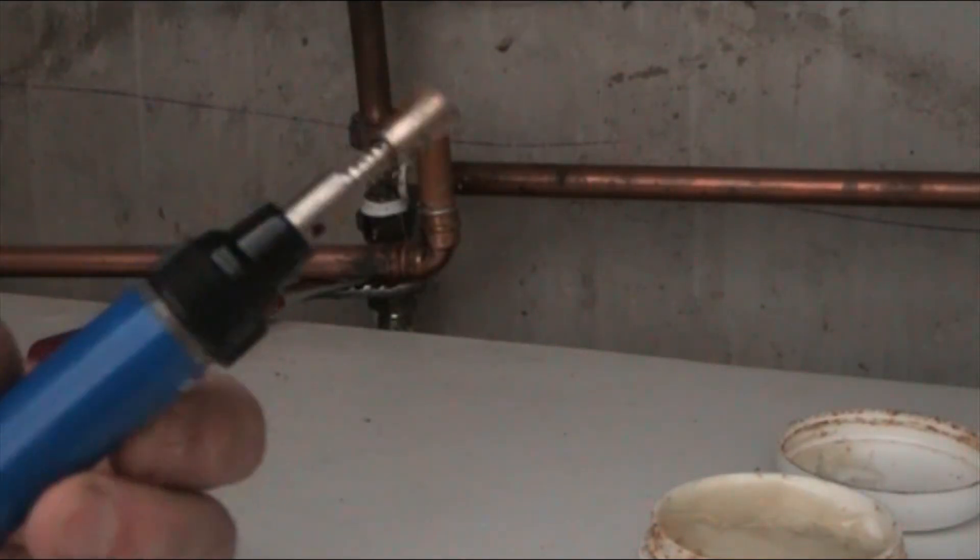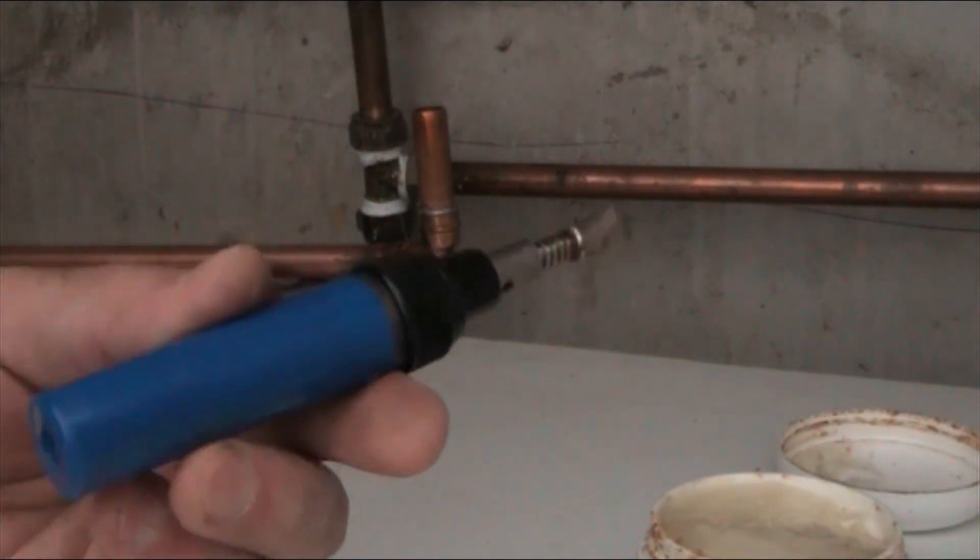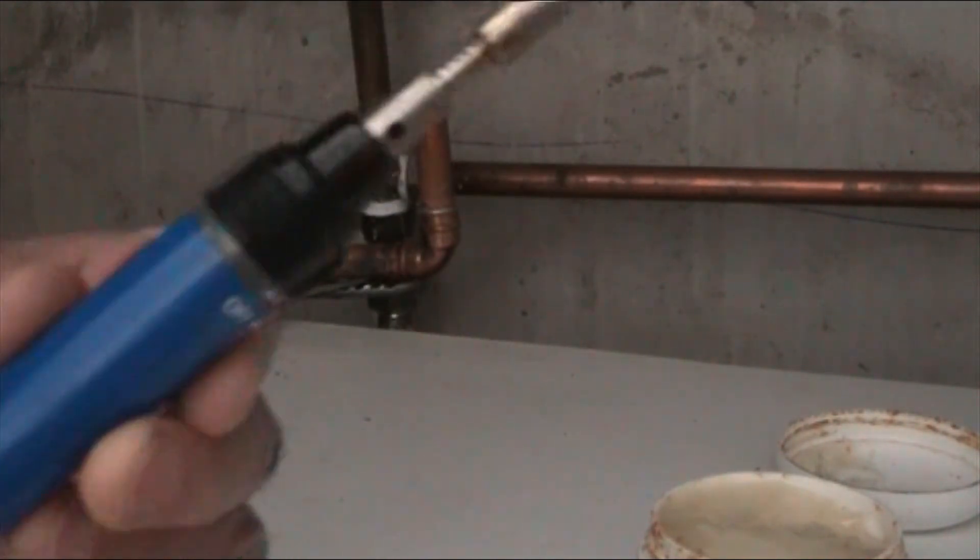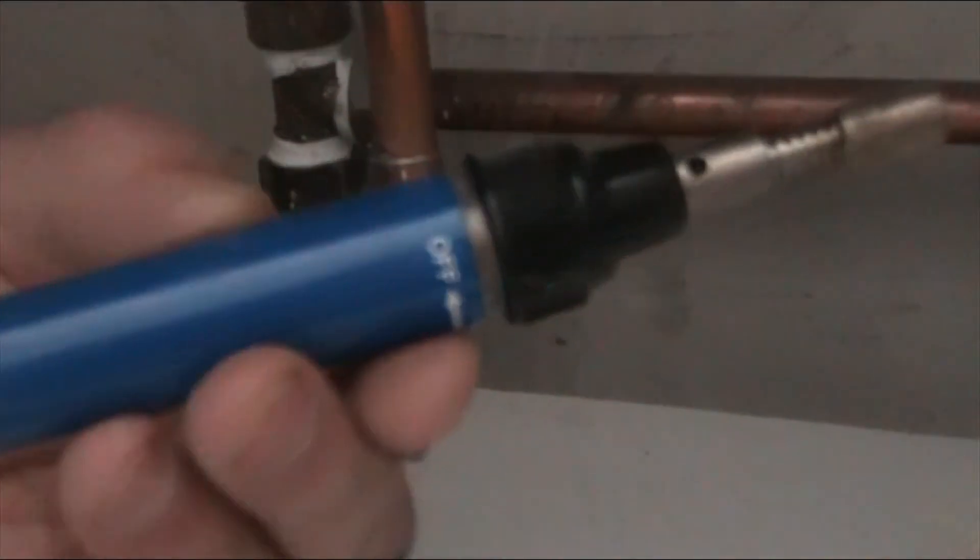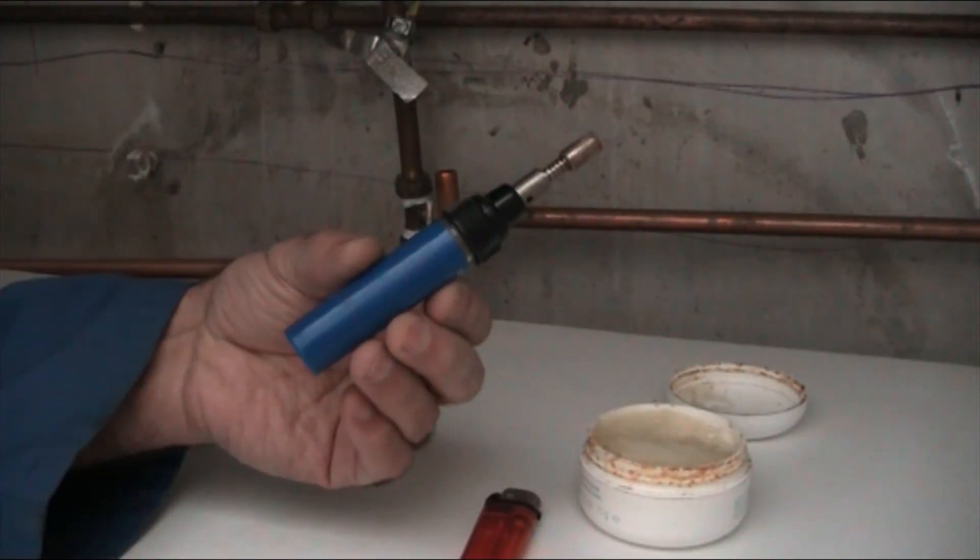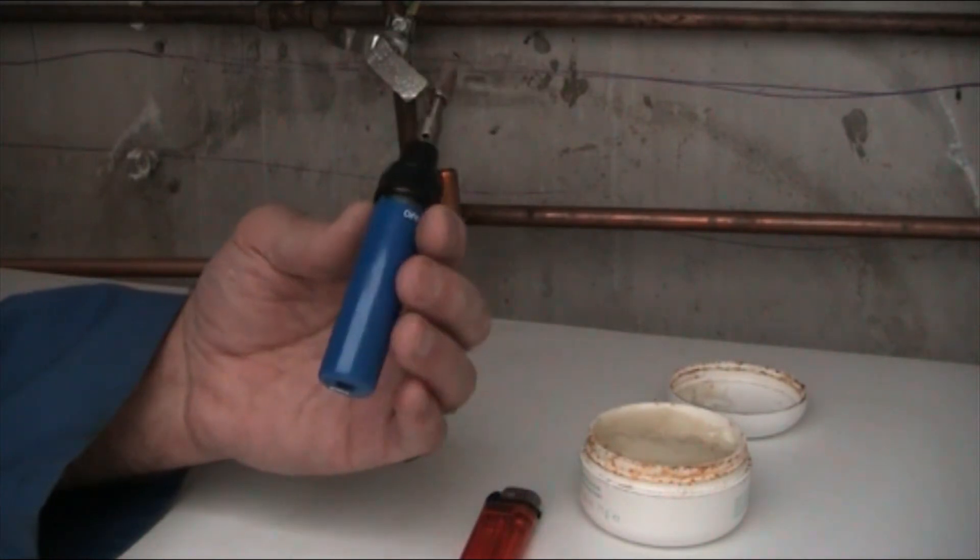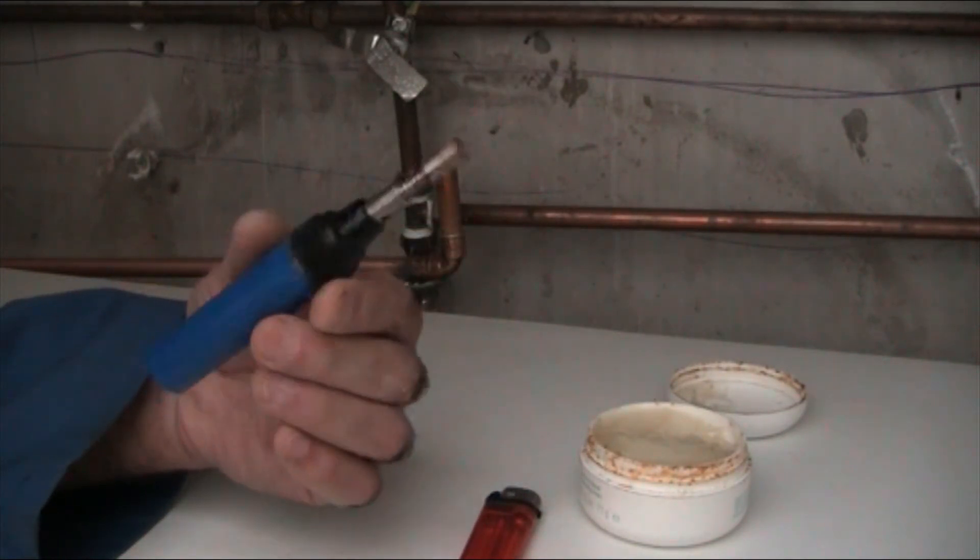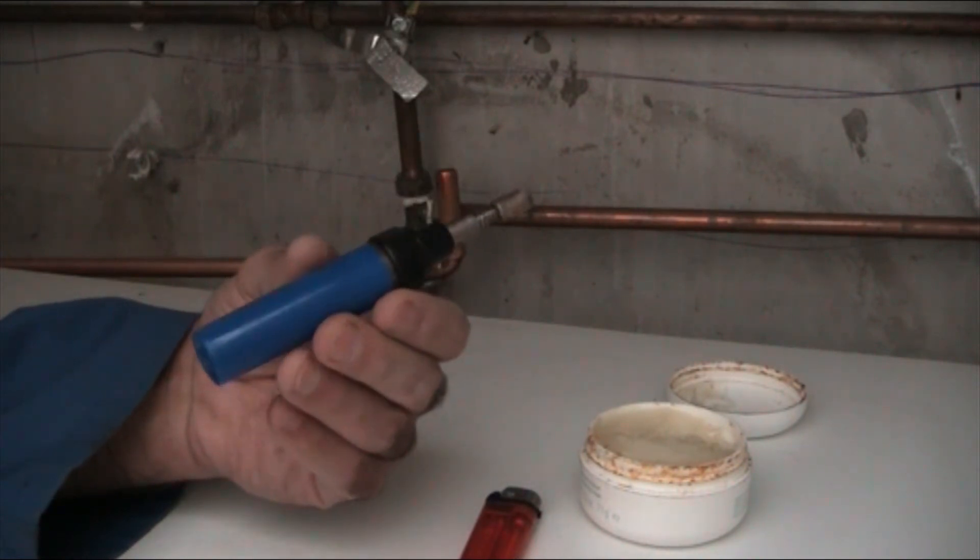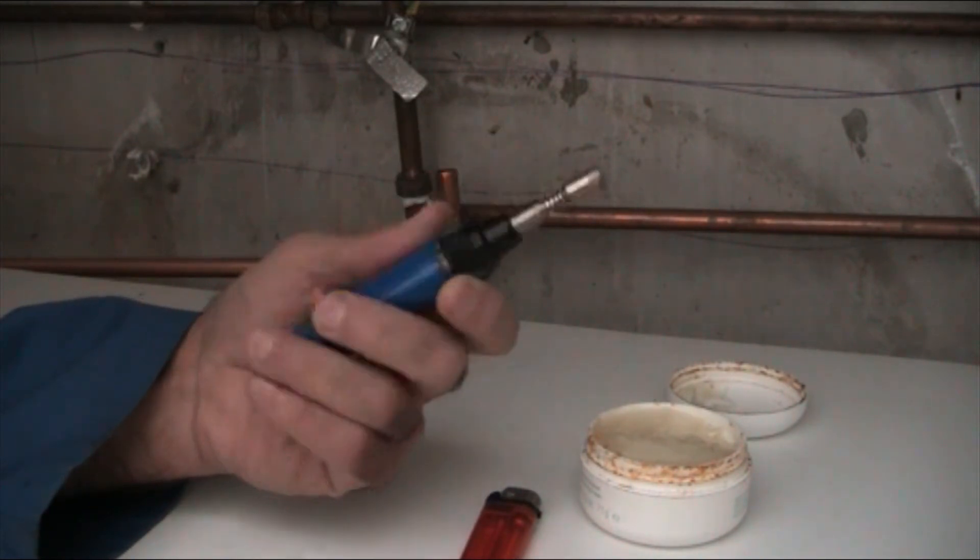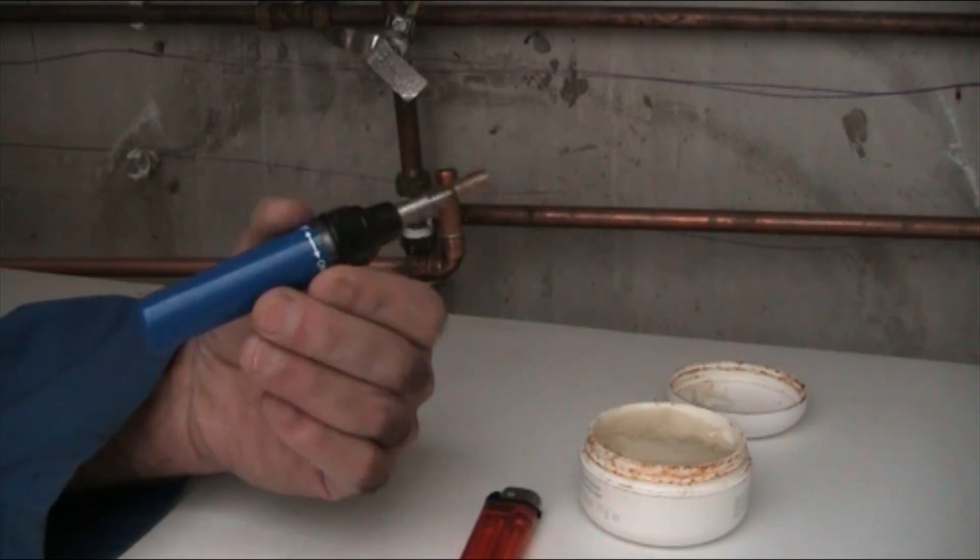This blowtorch is a little handy tool. It can be refilled so you only need a little gas can to fill it. It goes a long way to solder with this various pipes. The pipes I'm using here are 15mm but they can be used for bigger pipes as well. Not too massive but I think you can use up to 22mm pipes. So you don't need to have massive blowtorches to do that.